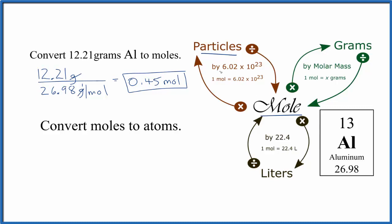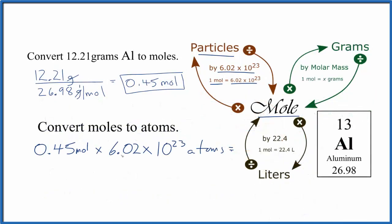So we're going to multiply by Avogadro's number, because one mole is equal to 6.02 times 10 to the 23rd particles. That'll look like this. And remember, Avogadro's number is 6.02 times 10 to the 23rd atoms per mole.